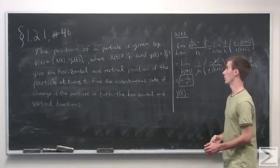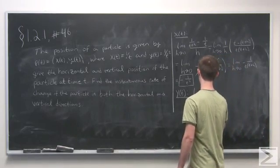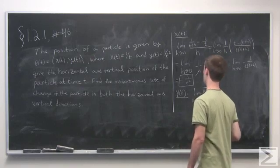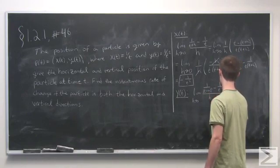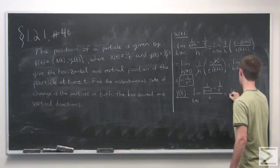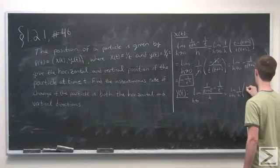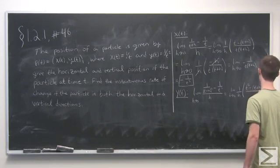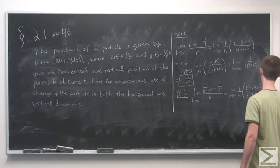Now we do the exact same thing for the function giving the y position. We take the limit as h goes to 0 of the change in y: 1 over t plus h quantity squared, minus 1 over t squared, all over h. Using the same trick as in the first part, we factor out 1 over h and simplify the numerator to get t squared minus the quantity t plus h squared, all over t squared times t plus h quantity squared.